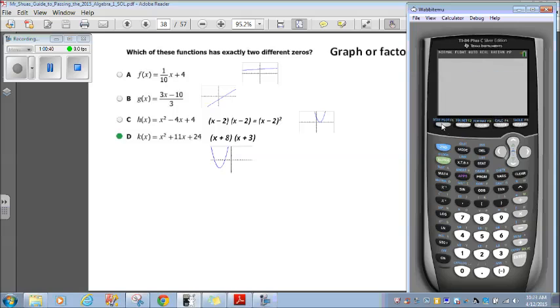And nope, there are no two different zeros there. So that doesn't make it. So let's look at the next one. Clear this out. I'm just going to put it in parentheses 3x minus 10 divided by 3. And we graph that. And well, yeah, that has an x-intercept and a y-intercept. So technically, that's two zeros. But that's not what they want. They want two different x-zeros, not an x and a y. So that's not going to work.